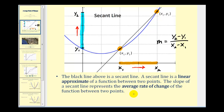So again, when you're finding the average rate of change of a function, you're really just determining the slope of a secant line. To get a better feel for this, let's take a look at an animation.